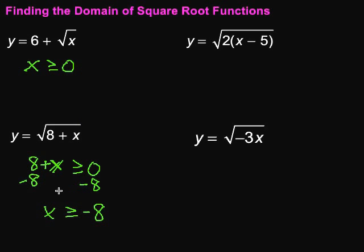Well, let's go a little bit bigger. How about negative 7? 8 plus negative 7 is basically 8 minus 7, which would be 1. We can take the square root of that. That's fine. So sometimes it's easy to fall into, oh, we just can't use any negative numbers. And that's not necessarily true, so be careful.